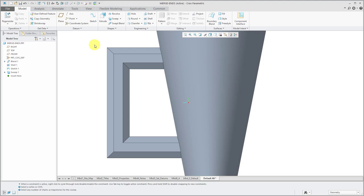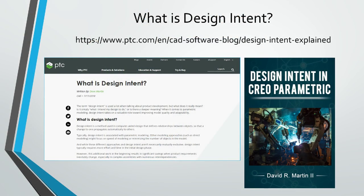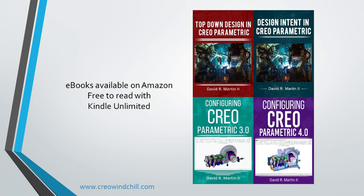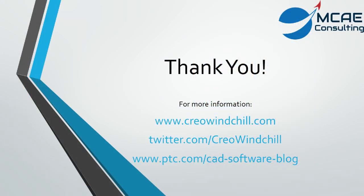That's how you create a simple sweep using a trajectory and a section. In later videos, we'll go into variable section sweeps, which is one of my favorite features in Creo Parametric because of all the power you have with it. I hope you enjoyed this video. For more information, please visit www.creowindchill.com. If you learned something from this video, please give it a thumbs up, and if you like this video, please click the subscribe button to be informed when new videos are uploaded. Thank you very much.